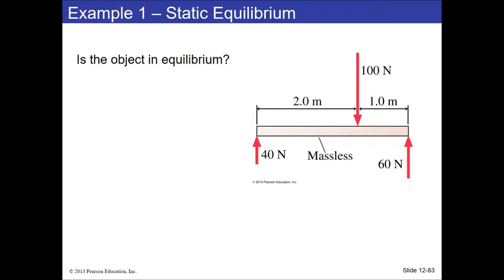We're looking at a massless rod. Normally if something has mass you'd consider gravitational torque, but here we just worry about forces. You can see right away: 100 newtons going down, 100 newtons going up — the forces in the y-direction add up to zero, so the object does not move up or down. There are simply no forces in the x-direction either. The question becomes: is there going to be a torque?